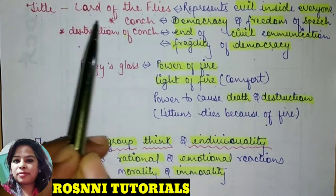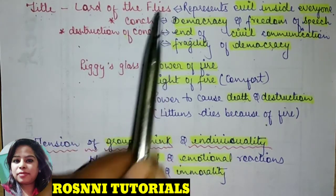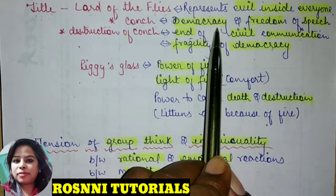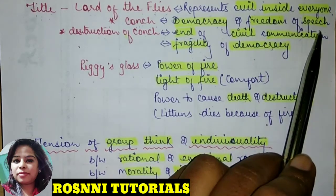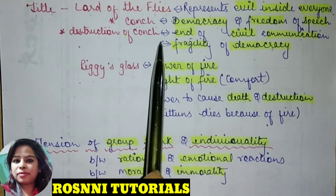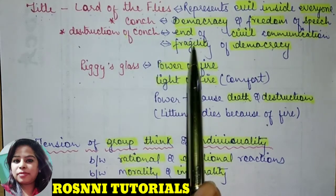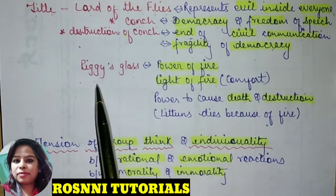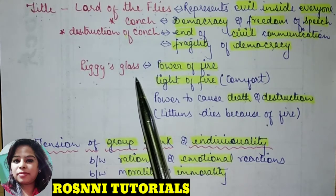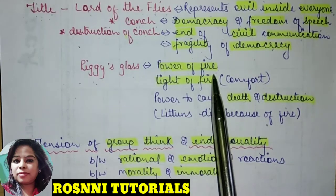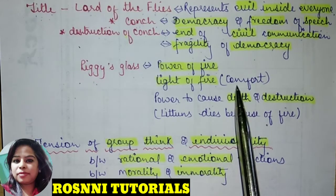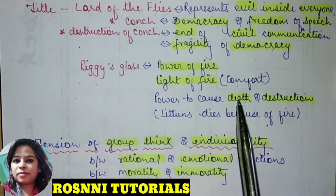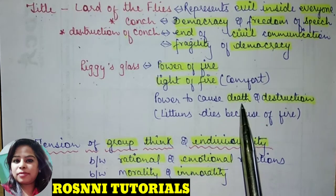Let's discuss the title 'Lord of the Flies,' which represents the evil inside everyone. In the story we find a conch, which represents democracy and freedom of speech. The destruction of the conch means the end of civil communication and a descent into chaos and death.